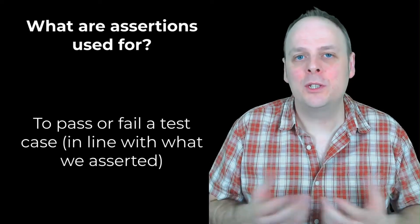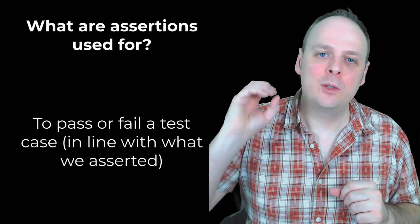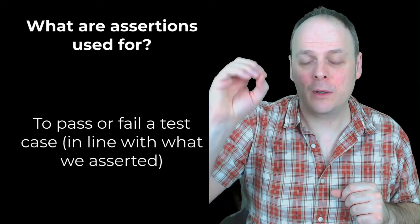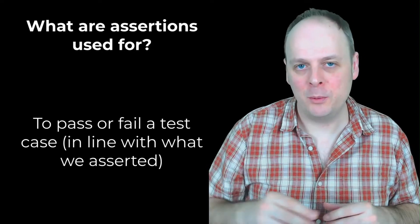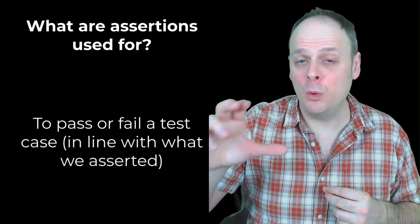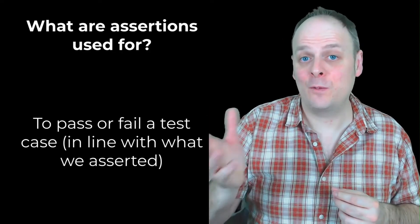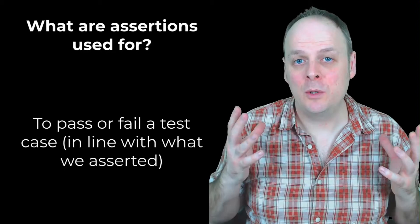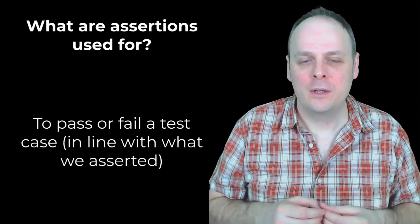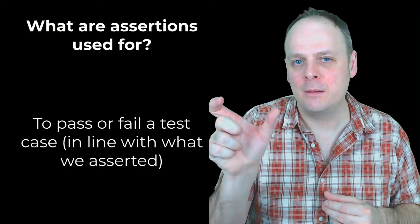What are assertions used for? Assertions are used for passing or failing a test. When you write your tests, you write tests which include a collection of assertions of what you believe to be true. If all the assertions in a test are true, that test passes. And if just one of the assertions is false and it evaluates to false, then that test fails. Assertions are used to evaluate the state of the world at a particular point in your unit test, usually after you've executed the method that you're testing.